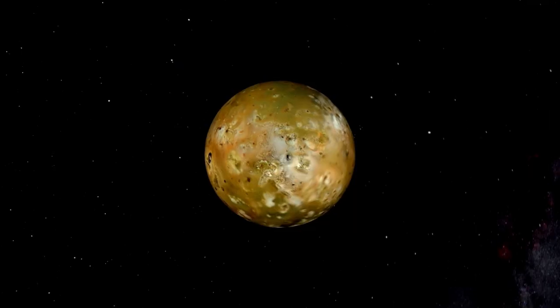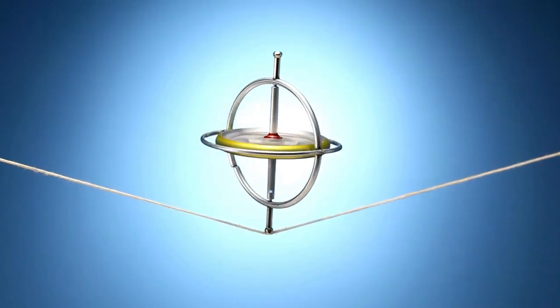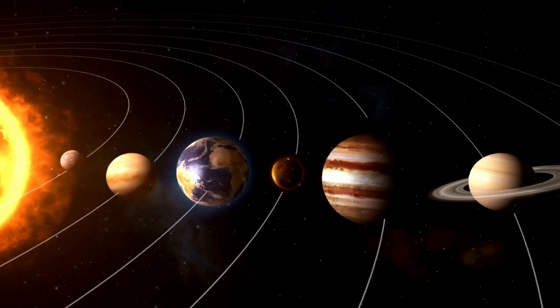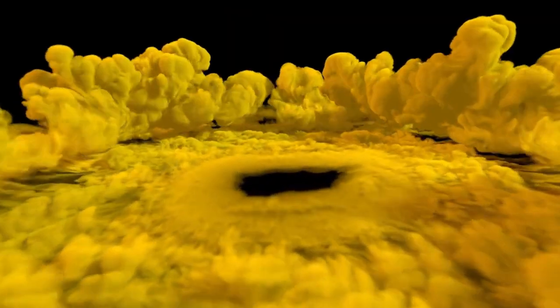But what happened when the Voyager spacecraft crossed the boundary of this solar system bubble? Could we truly be living inside a massive space bubble, and how does this discovery reshape our understanding of the solar system?